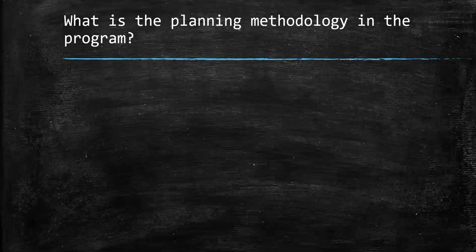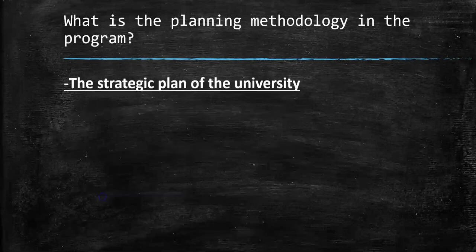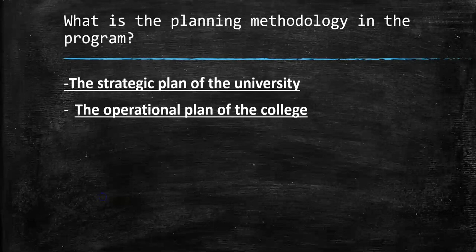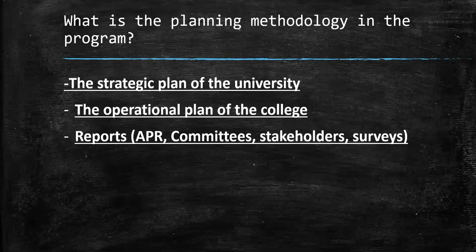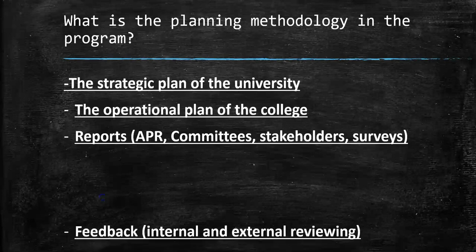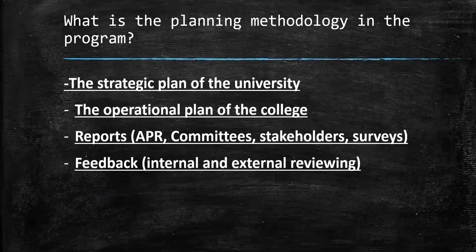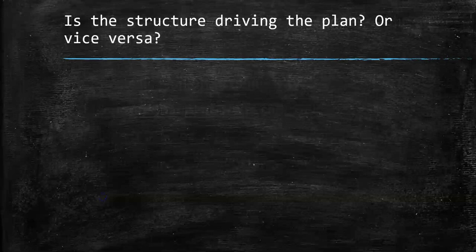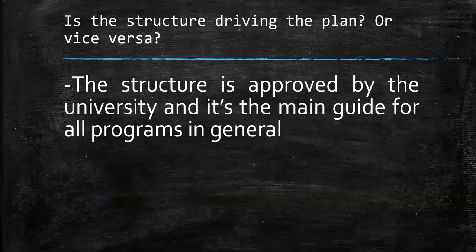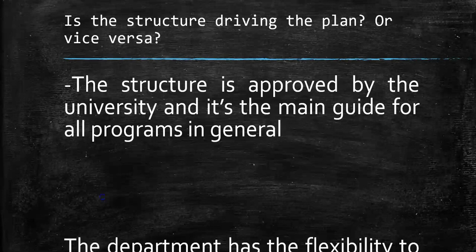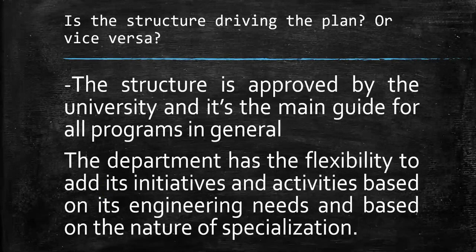What is the planning methodology in the program? The strategic plan of the university, the operational plan of the college, reports, annual program report, committees, stakeholders, surveys, feedback — internal and external reviewing. Is the structure driving the plan or vice versa? The structure is approved by the university and is the main guide for all programs in general. The department has flexibility to add its own initiatives and activities based on its engineering needs and the nature of its specialization.